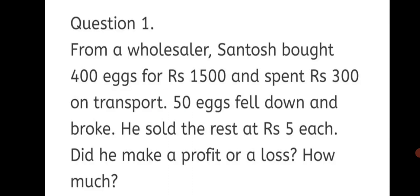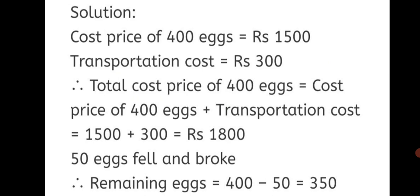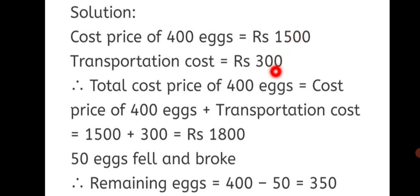Practice Set 32, Question 1. From a wholesaler, Santosh bought 400 eggs for Rs. 1500 and spent Rs. 300 on transport. 50 eggs fell down and broke. He sold the rest at Rs. 5 each. Did he make a profit or a loss? How much? Cost price of 400 eggs = Rs. 1500. Transportation cost = Rs. 300. So total cost price = Rs. 1500 + Rs. 300 = Rs. 1800.